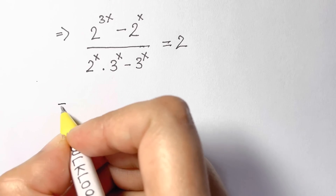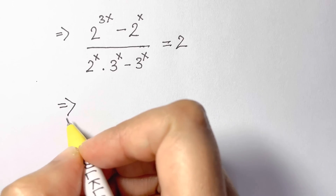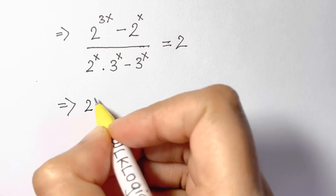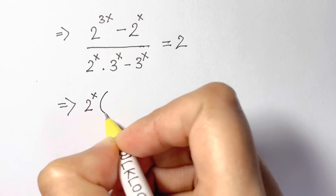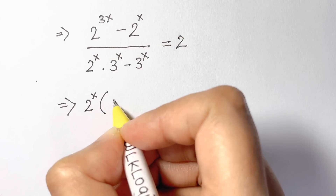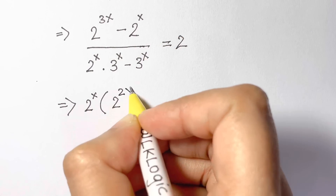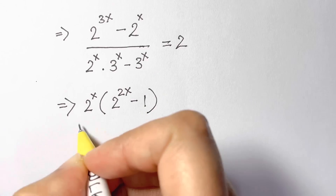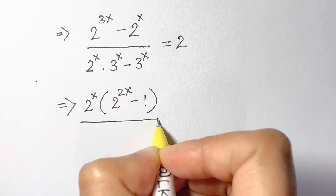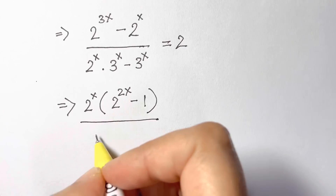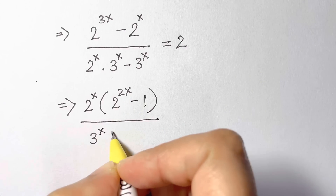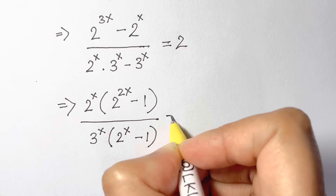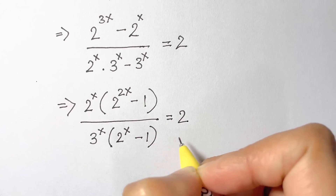Now we take 2 to the power of x common from the numerator. So we are left with 2 to the power of x times (2 to the power of 2x minus 1), over here we take 3 to the power of x outside, so we are left with (2 to the power of x minus 1) equals 2.